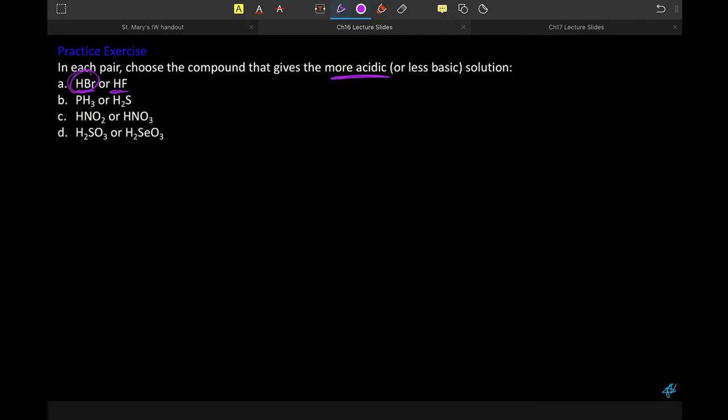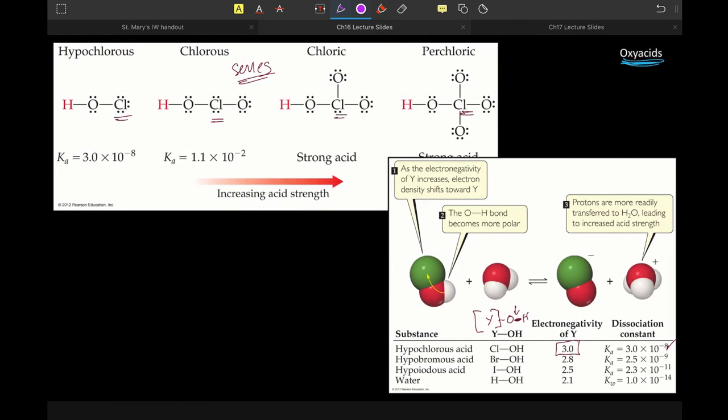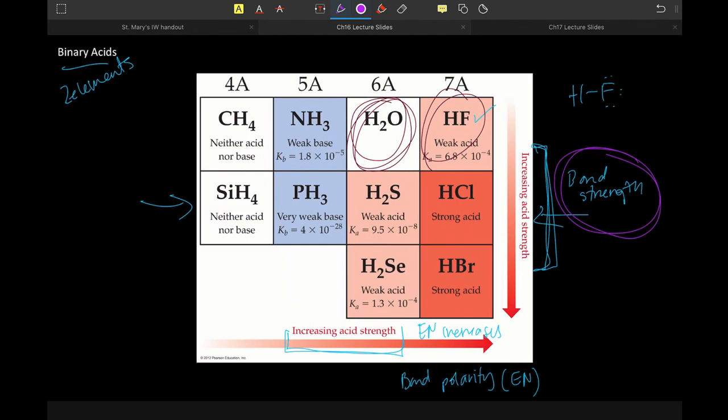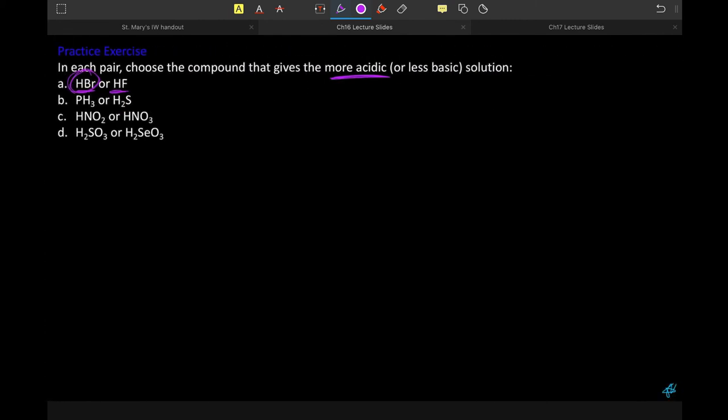PH3 or H2S, again, we're looking at some binary acids. Phosphorus and sulfur, phosphorus and sulfur are in the same period. So then we are just looking at which is the more electronegative, because the more electronegative means a more polar bond, which means a stronger acid.